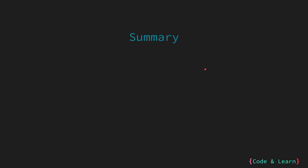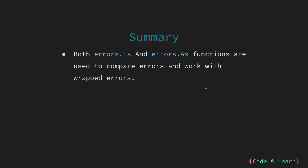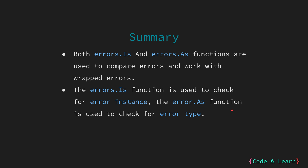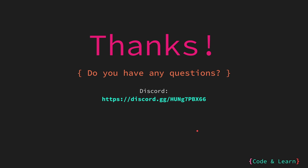Let's now summarize everything we learned in this lesson. We looked at functions exported by the errors standard library package: errors.Is and errors.As. Both are used to compare errors and work with wrapped errors. errors.Is is used to check against an instance of an error like sentinel errors, while errors.As is used to check for the type of the error and get the matching error type from the error chain, which can then be used to access fields on the custom error. That's it for the lesson — I hope you enjoyed it. Feel free to leave a comment or reach out on our Discord server. Thanks for watching. Happy coding.